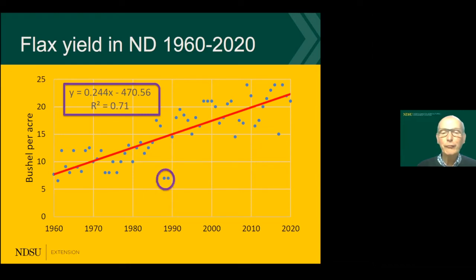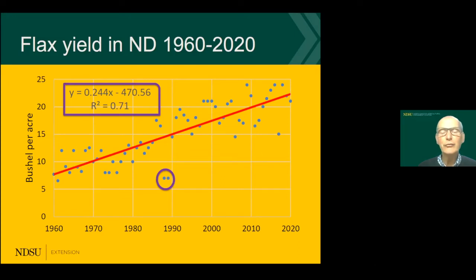On this graph there are two dots quite below the trend line. Those were dry years — 1988 was a drought year. Unfortunately we have been in a drought condition recently and haven't received enough rain to refill our subsoil, so we are starting 2021 in a dry season. Hopefully we will get rain and will not end up far below the trend line this coming year.